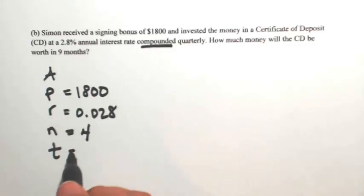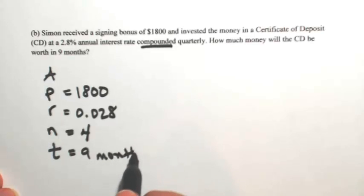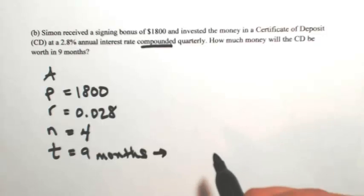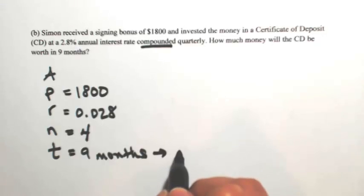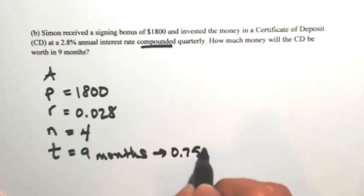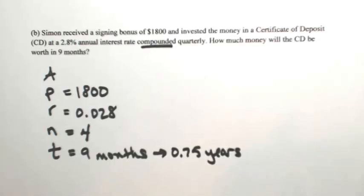And the time is nine months. Time has to be in years, so I need to change this over. So nine months, if I take nine out of 12, that's going to be three quarters of a year. In other words, 0.75 years. So it's got to be done in years. So nine months out of 12 months is 0.75.